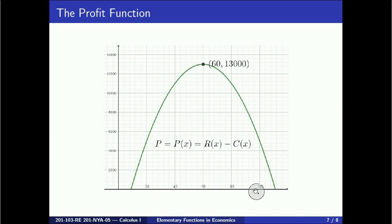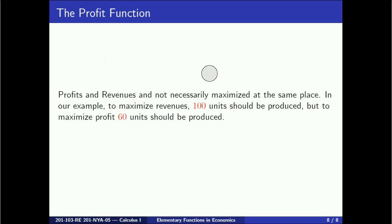Again, the graph of this function is that of a concave down parabola, but this time the vertex is when x equals 60 units. We see that revenues and profit are not necessarily maximized at the same place. In our example, to maximize revenues, 100 units should be produced, but to maximize profits, 60 units should be produced.